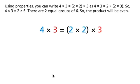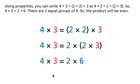Using properties, you can write 4 times 3 equals 2 times 2 times 3 as 4 times 3 equals 2 times 2 times 3. So, 4 times 3 equals 2 times 6.